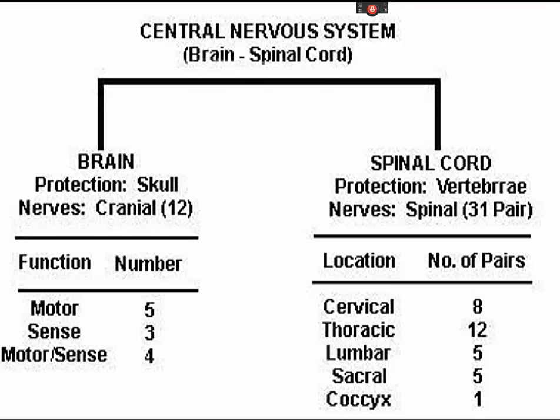Sensory nerves contain sensory neurons, and motor nerves contain motor neurons. Mixed nerves contain both sensory and motor neurons. The sensory neurons are usually connected to motor neurons by intermediate neurons, sometimes called interneurons.